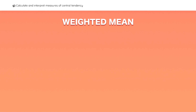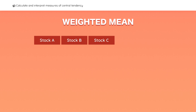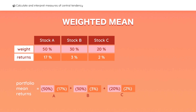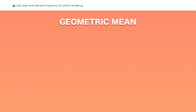Now let's calculate the weighted mean for this portfolio. These are the weights in each stock and the returns of each stock in the portfolio. To get the weighted average, simply multiply the return of each stock by its weight in the portfolio. The weighted mean of the stocks in this portfolio is equal to 9.8%.